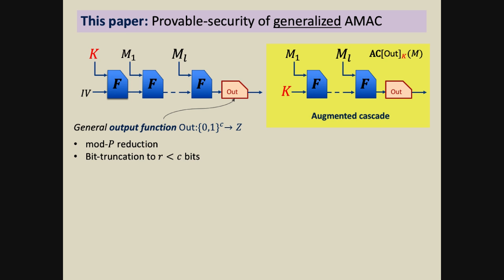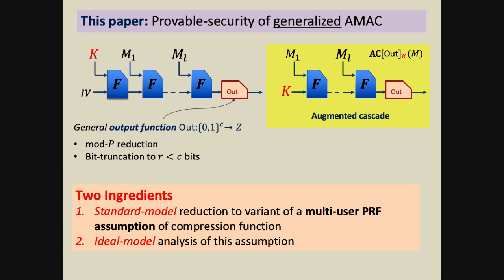In this talk, I'm going to focus on augmented cascades. You have to trust me that it's quite easy to get a bound on AMAC generically, or almost generically, given a bound on augmented cascades. In fact, in the paper, our analysis consists of two ingredients that I'm going to talk about next.